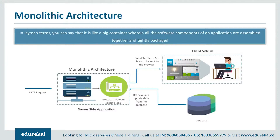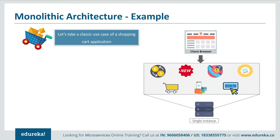Also, if only any one feature had to be updated, then the complete system had to be built again. Let's understand more about monolithic architecture using a shopping cart application. As a user, when you open a shopping cart application, you see different features for handling wishlist, new labels, new brands, customer services, and so on. But if developers had decided to build this on a single framework, then all the features were put together on a single database. This created problems for scalability, fault tolerance, and agility.